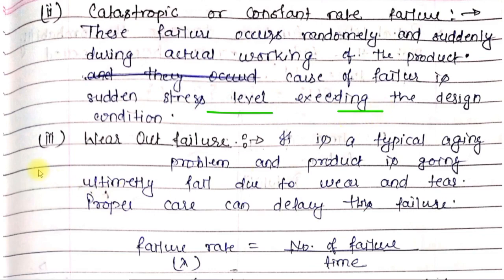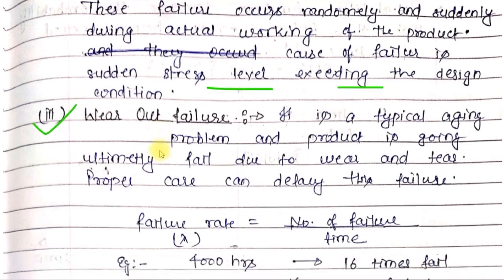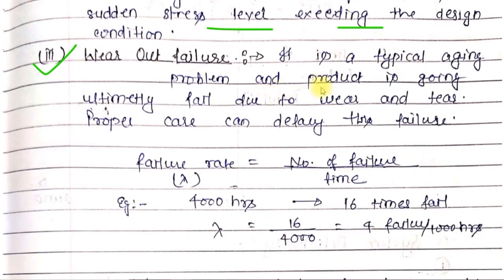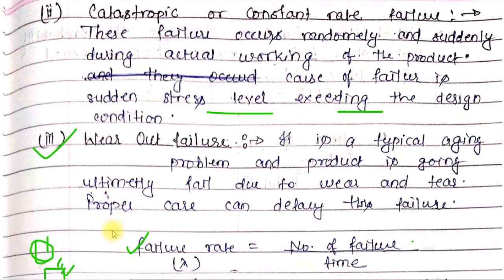Wear-out failure: It is a typical aging problem where the product ultimately fails due to wear and tear. When you use a product repeatedly, a time comes when the product starts to wear out. For example, if we use any electronic product or cell phone excessively, its paint starts coming off from corners - this is called wear-out. This was the complete bathtub curve explanation.